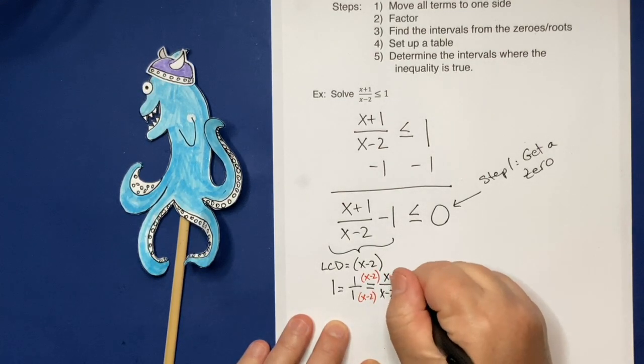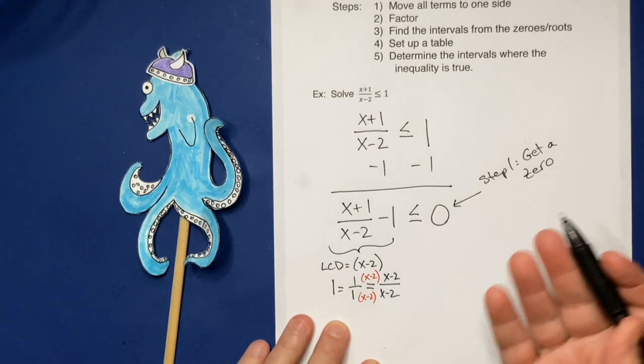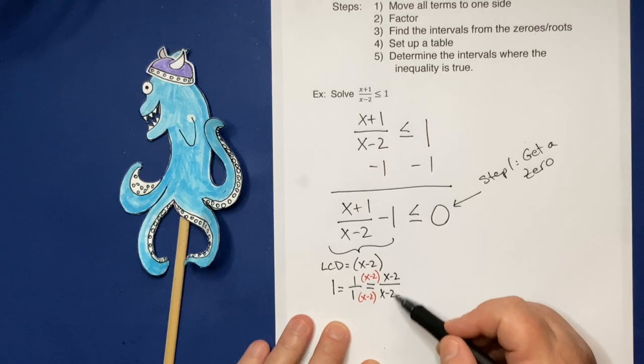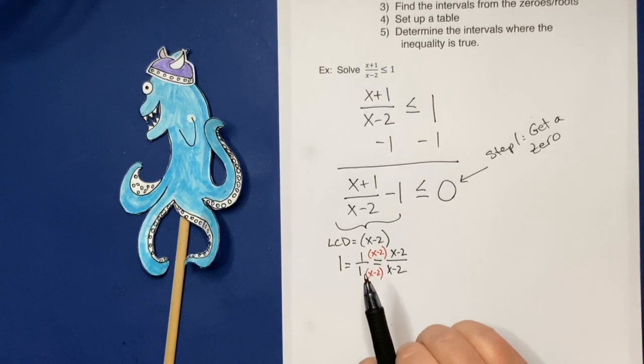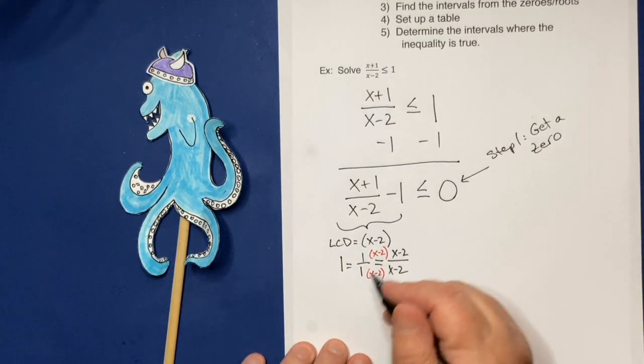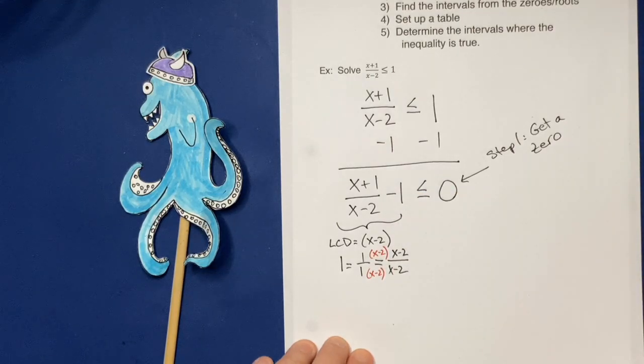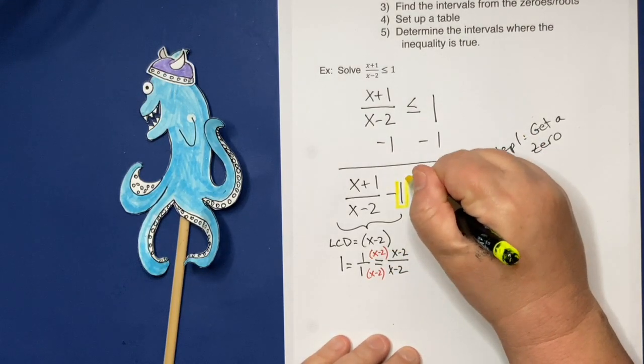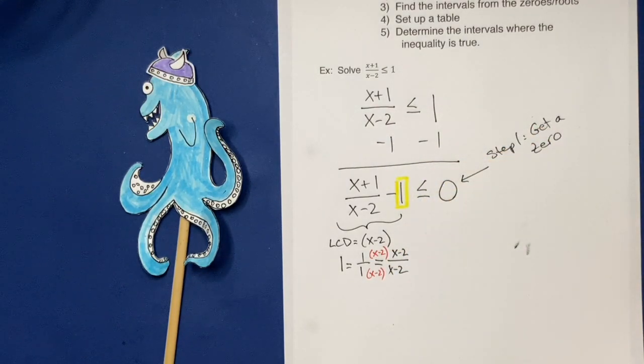And not surprisingly, we get x minus 2 over x minus 2, which kind of makes sense, right? If we've got a 1, it should be the same thing, top and bottom. So what I'm going to do is I'm going to go ahead and in place of that 1, let me see if I've got a nice yellow, I do, in place of this one right here.